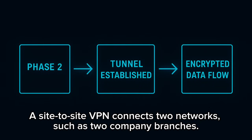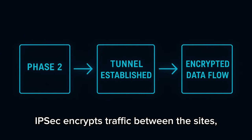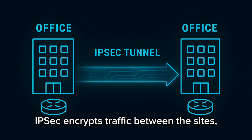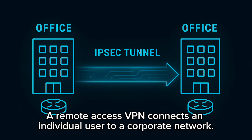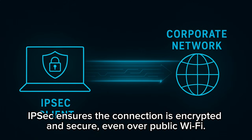A site-to-site VPN connects two networks, such as two company branches. IPsec encrypts traffic between the sites, making it secure for employees on both ends. A remote access VPN connects an individual user to a corporate network. IPsec ensures the connection is encrypted and secure, even over public Wi-Fi.